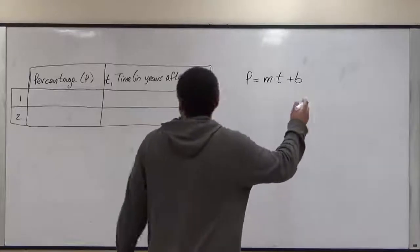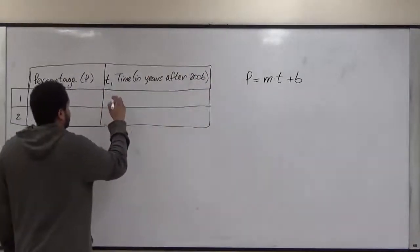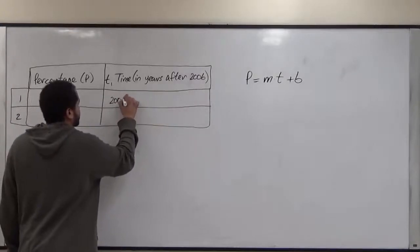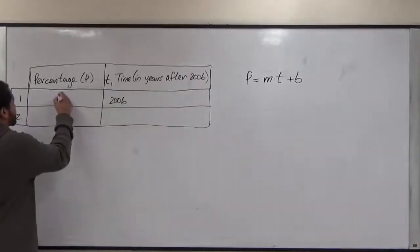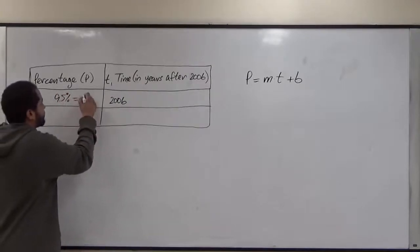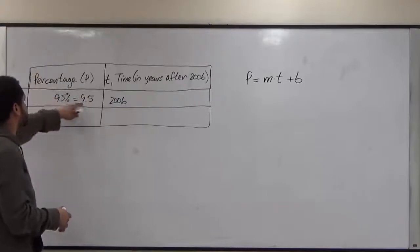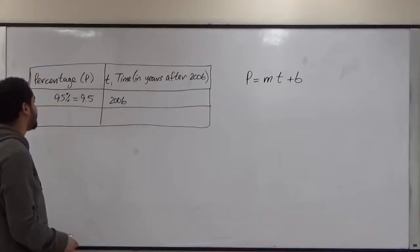We know that the first percentage they gave us came in the year 2006 and the percentage was 9.5%. This is just going to become 9.5 because the P is already in terms of percent.